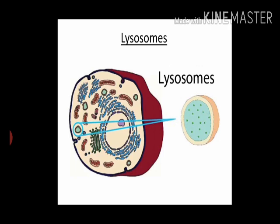Therefore, lysosomes are called the suicide bags of the cell. When lysosomes notice any danger or damage to the cell, they release all their enzymes and digest themselves — that is why they are called suicide bags. Structurally, lysosomes are membrane-bound sacs filled with digestive enzymes, and these enzymes are made by the RER — the rough endoplasmic reticulum.